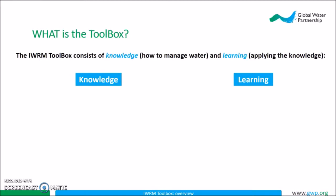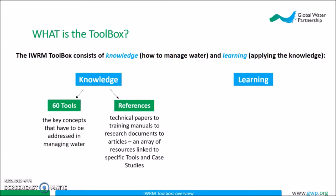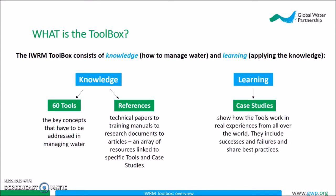Now we can move on to what the toolbox is. First, it consists of two parts: knowledge and learning. The GWP toolbox provides knowledge on how to manage water through two different means: tools and references. The first part of this section contains 60 tools which cover the crucial components of managing water. The second part of knowledge consists of references which range from technical papers to training manuals. To actually apply water management knowledge, the toolbox also helps with learning through case studies, which help demonstrate to users how tools and references have been used all over the world. The case studies critically examine real-life projects and ultimately help us apply new knowledge to our own ongoing projects.